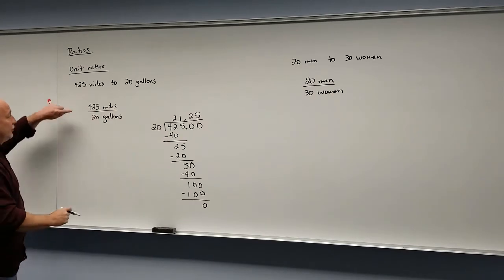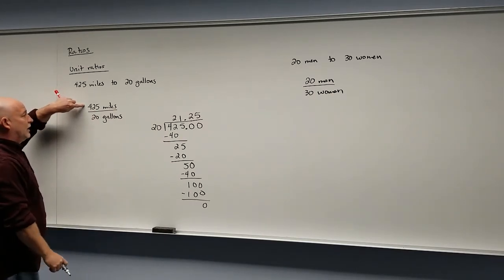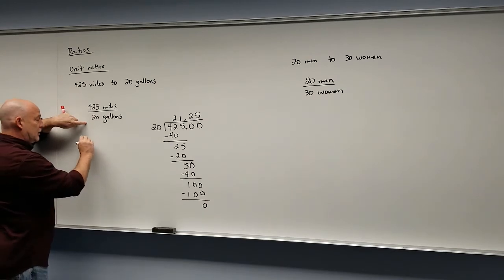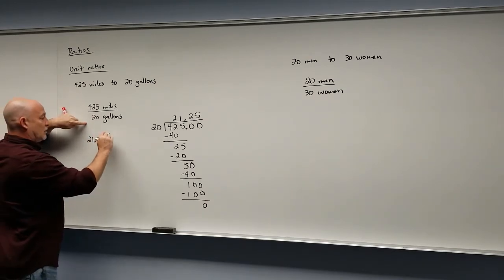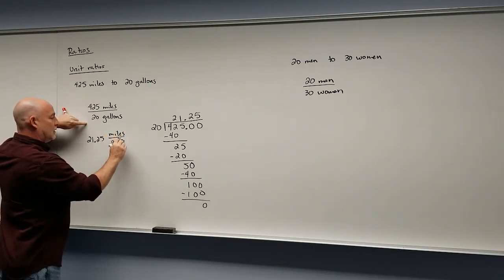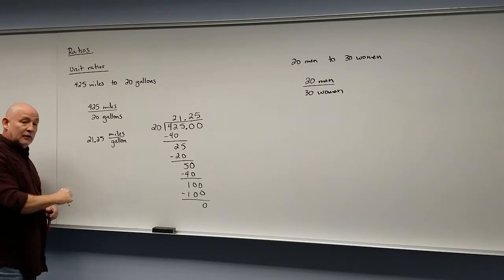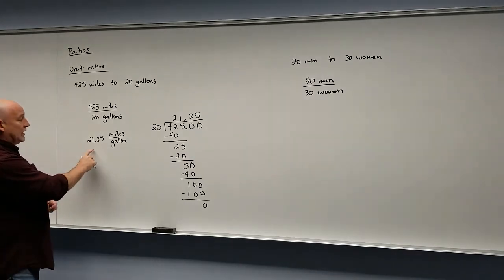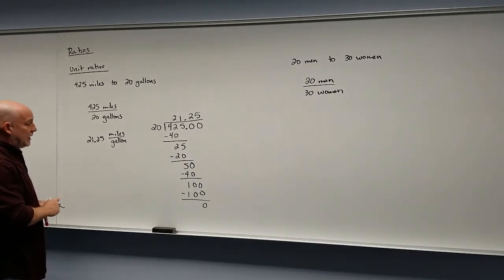So there it goes in evenly. So this is, we have 425 miles for 20 gallons. Or another way to say that, this goes 21.25 or 21 and a quarter miles per gallon. Now this is generally how you're going to be told how a car gets its gas mileage. You say, okay, that car gets 21 miles per gallon. So having a unit ratio down here at the bottom, being one on the bottom, is pretty useful so you can kind of see the ratio.